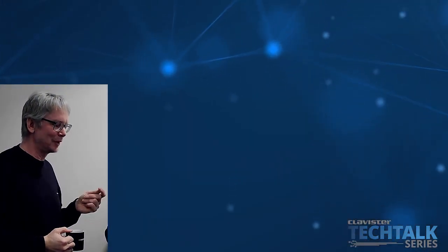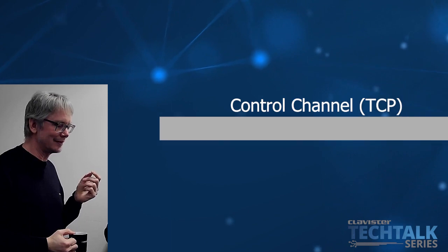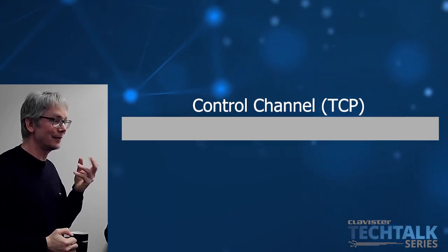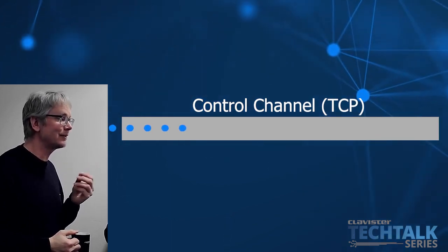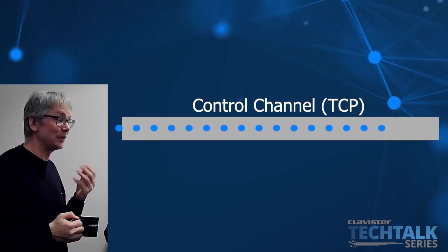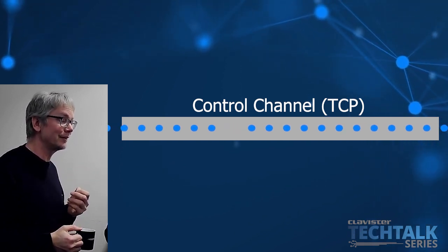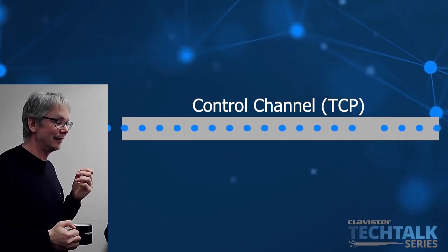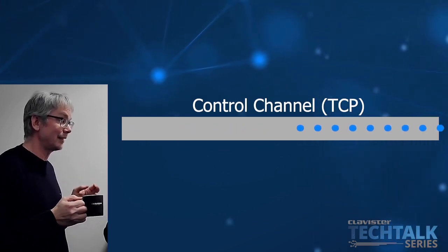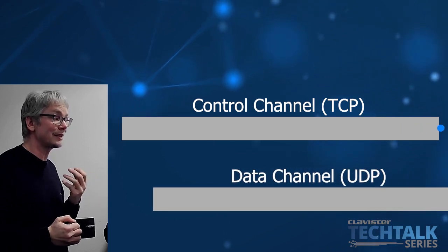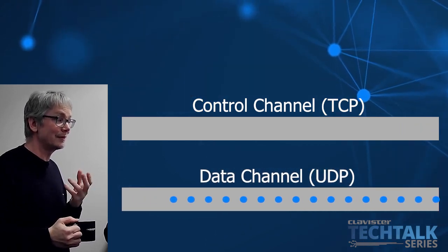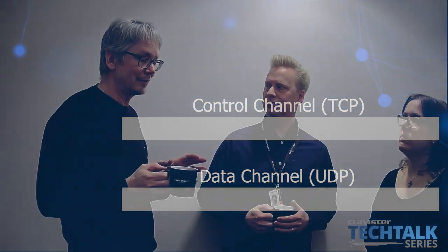OpenConnect has a control channel over TCP that initiates the communication. Data can also be transmitted using TCP. And after this, if it's enabled, a UDP data channel is connected. And that's what makes the speed so good.